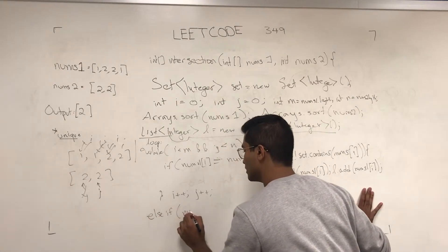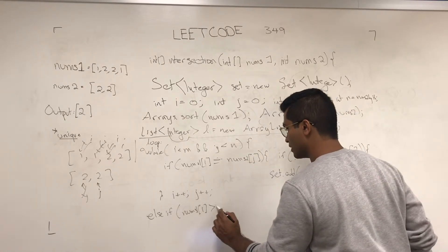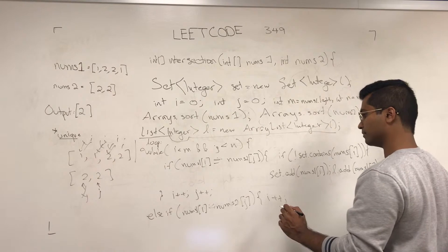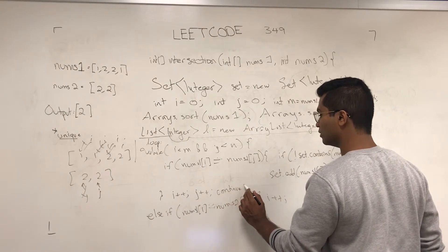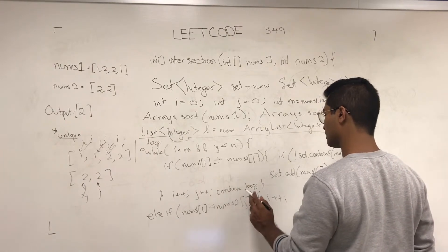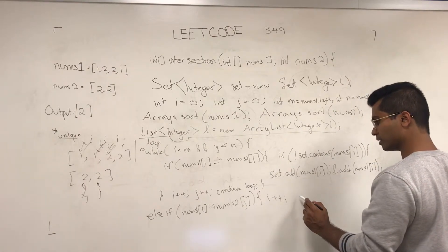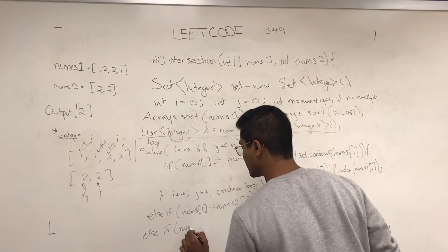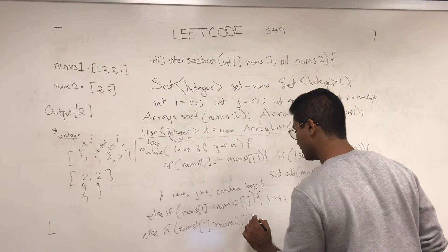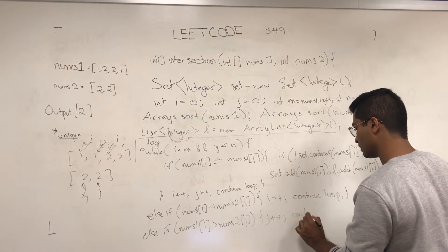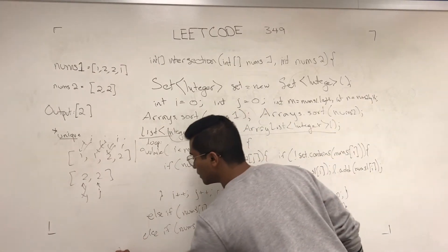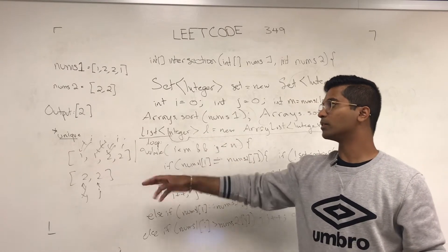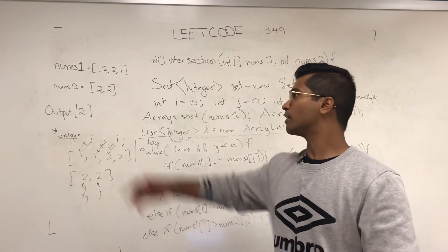Else if nums1[i] is less than nums2[j], i++, continue loop. Else if nums1[i] is greater than nums2[j], j++, continue loop. So now our list l has all the integers that we need. All we have to do is make a new array of that size and return that array.